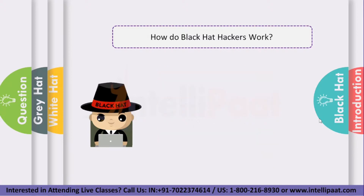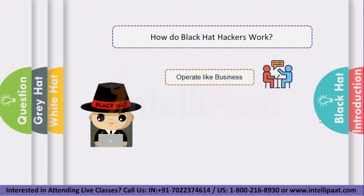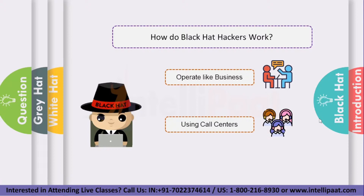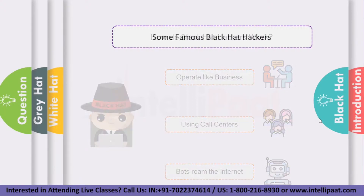How do black hat hackers work? Hacking can operate like a big business, the scale of which makes it easy to distribute malicious software. Organizations boast partners, resellers, vendors and associates, and they can buy and sell licenses for malware to other criminal organizations for use in new regions and markets. Some black hat organizations even have call centers, used to make outbound calls pretending to work for a well-known tech organization such as Microsoft. Other hackers are fully automated and don't involve human contact — in these cases, attack bots roam the internet to find unprotected computers to infiltrate, often through phishing, malware attachments or links to compromised websites.